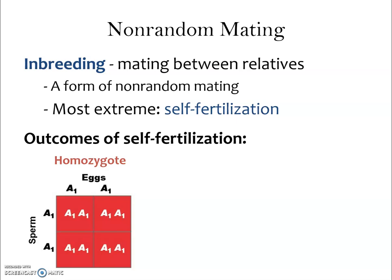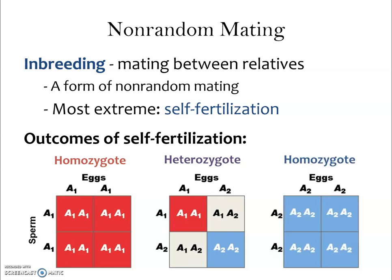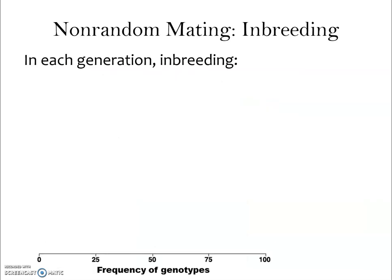Let's think about the outcomes of self-fertilization for one individual. If you're a homozygote with both dominant alleles (A1A1), all of your offspring look the same — they're all homozygotes just like you. If you're a heterozygote, you make two types of homozygotes and some heterozygotes. And if you're the other homozygote (A2A2), again all of your offspring look like you.